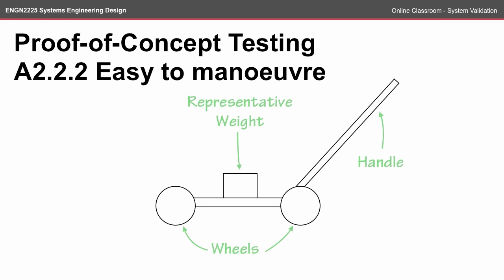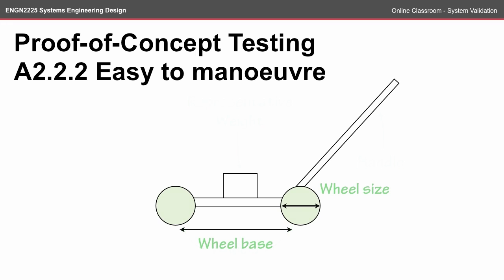If we look at the example of attribute 2.22, easy to maneuver, you could set up a test rig that had some sort of representative weight, some sort of wheels, and some sort of handle to try and validate the design against that attribute. You would design your test rig in such a way that you could change some of the variables — for example, you might want to change the wheelbase or the wheel size quite easily. By creating a test rig to show this proof of concept, you're able to run a number of simulations without having to invest too deeply in your design.